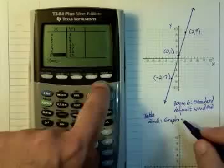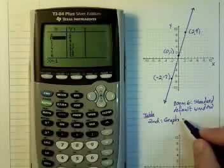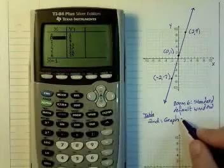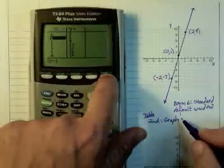So I can scroll up and down to look at the values on the table. To get back to the window where I had the graph, I can just press graph.